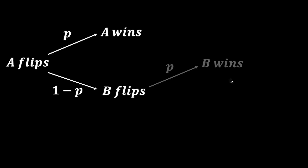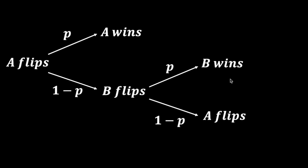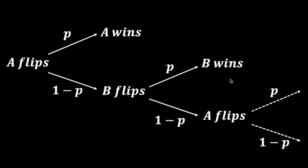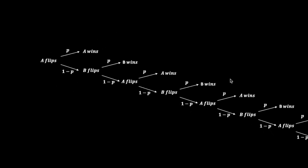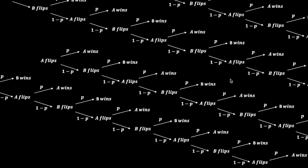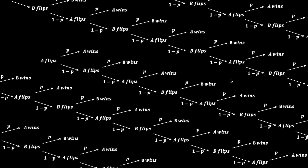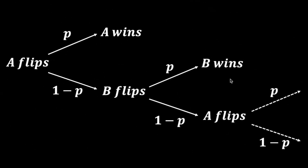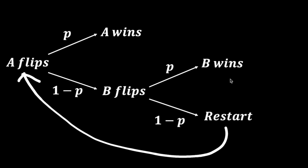With probability P, B gets heads and wins. With probability 1-P, B gets tails and the turn passes back to A. Since we are back to A flipping, from here on this cycle repeats — and on to perpetuity. This simple set of outcomes forms the building block to our problem, which is recursive in nature. The moment A gets to flip again, this cycle restarts.